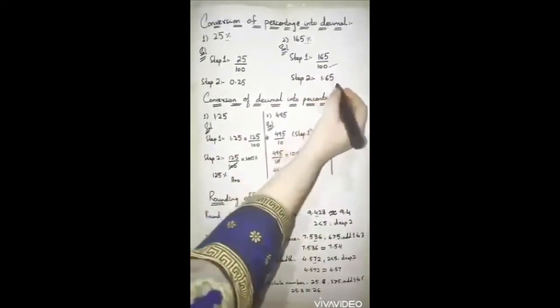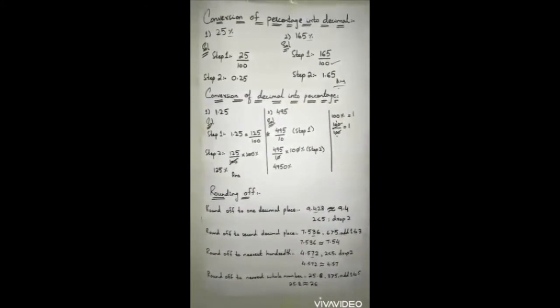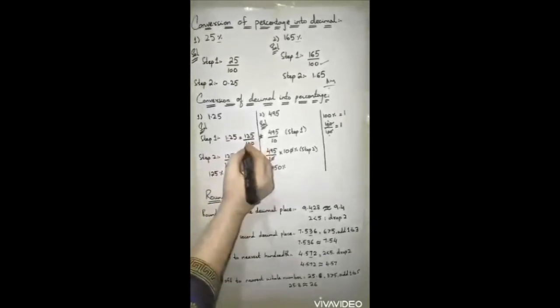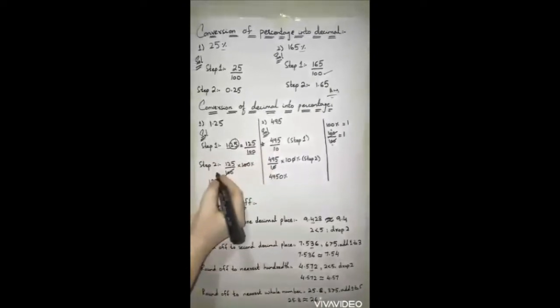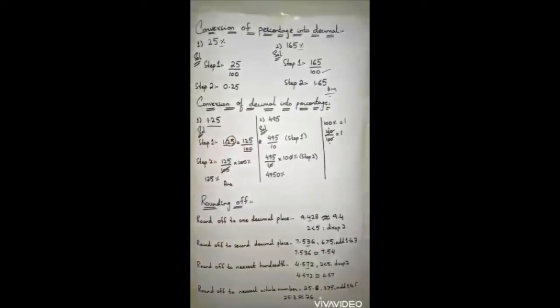Now comes the second topic: conversion of decimal into percentage. Example one is 1.25 — you want to convert this decimal number into percentage. Again you follow two steps. Step one: remove the decimal point. Since you have two digits after the decimal point, you write 100 as the denominator, giving 125 upon 100. Step two: to find the value as a percentage, you multiply this fractional number by 100 percent.